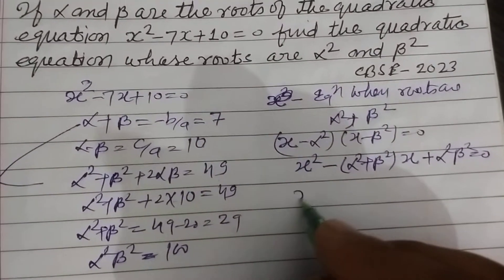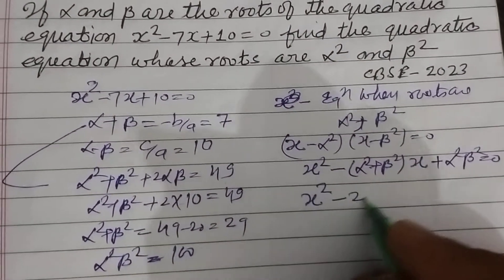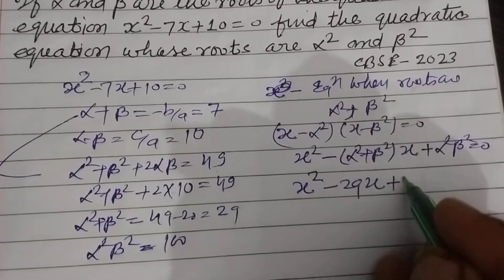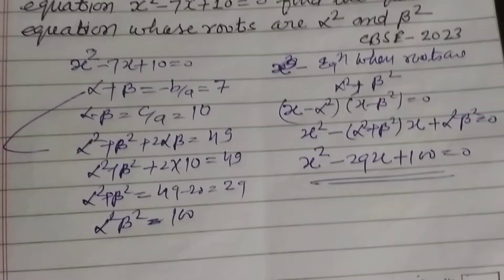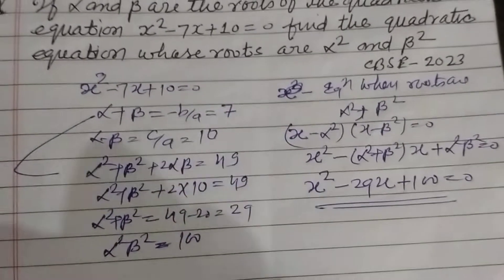And α²β² = (αβ)² = 10² = 100. So putting these values, x² - 29x + 100 = 0. This is the required equation if roots are α² and β².